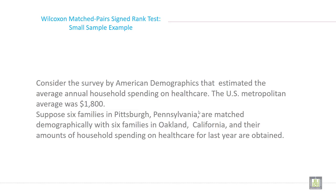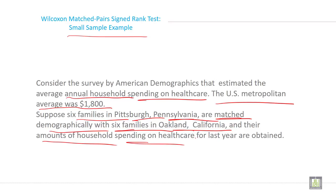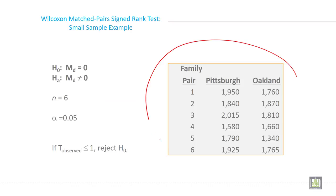A small sample size example for the Wilcoxon matched-pairs signed-rank test. Consider the survey by American Demographics that estimated the average annual household spending on healthcare. The US metropolitan average was $1,800. Suppose six families in Pittsburgh, Pennsylvania are matched demographically with six families in Auckland, California, and their amounts of household spending on healthcare for last year are obtained. This is the data obtained.